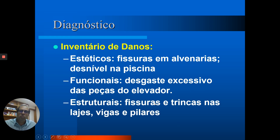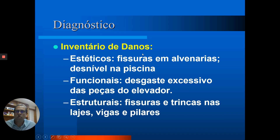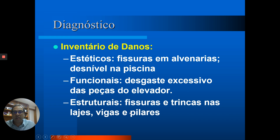Passamos à etapa de diagnóstico. A primeira coisa que fizemos foi um levantamento completo de todas as patologias no prédio. A obra foi entregue em 1990, as patologias começaram pouco depois, e nosso envolvimento foi em torno do ano 2000 — dez anos após a entrega. Foi nos pedido um diagnóstico para saber as causas das patologias e se era necessário fazer o reforço. Observamos que a obra apresentava danos estéticos como fissuras em alvenarias, danos funcionais como desgaste excessivo do elevador por conta de desaprumo, e também danos estruturais como trincas e fissuras em lajes, vigas e pilares.